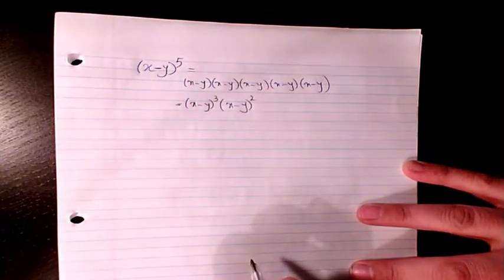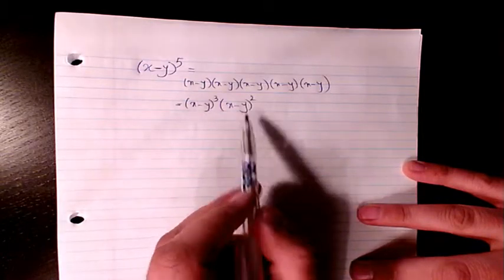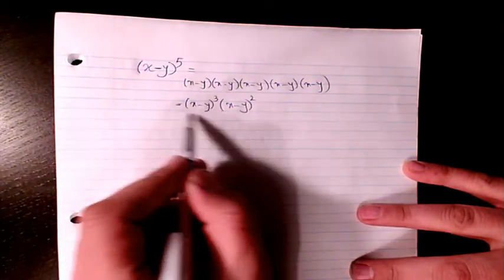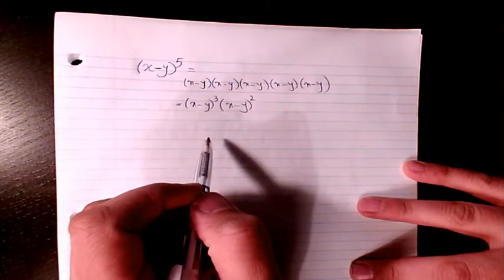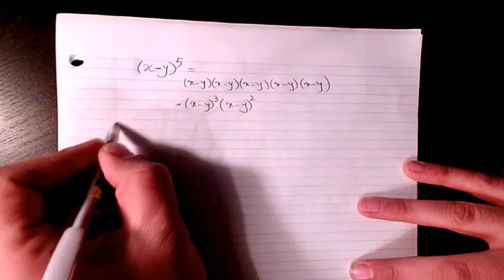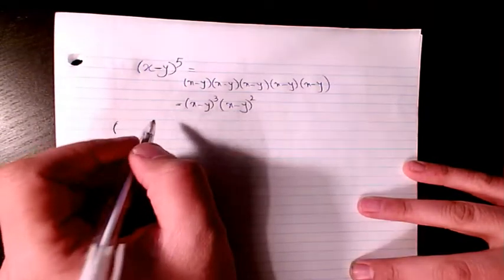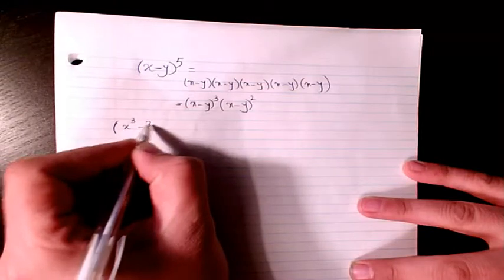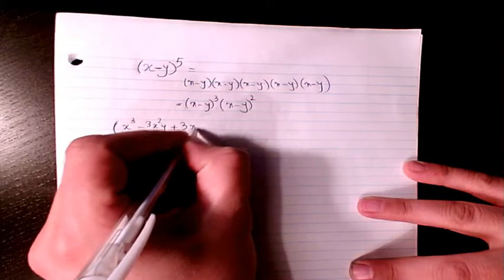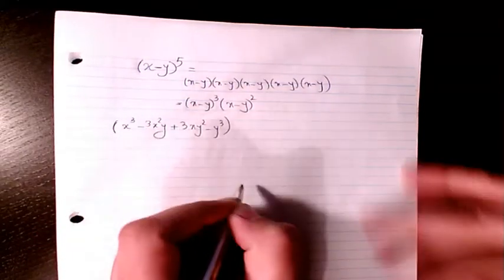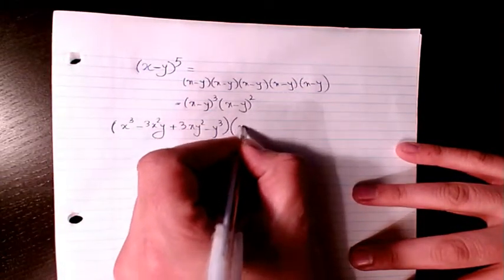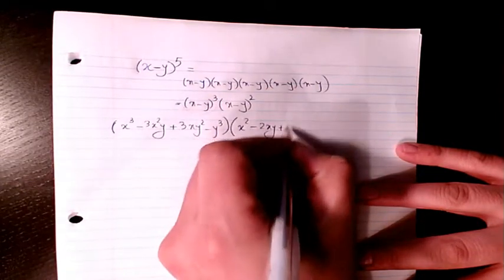I choose the second way of doing it. We had each of them separately in other videos, so you can check the video list. I want to write the expansion of the first term: x cubed minus 3x squared y plus 3x y squared minus y cubed. And the second term, (x minus y) squared, we had that one already too, so it's x squared minus 2xy plus y squared.